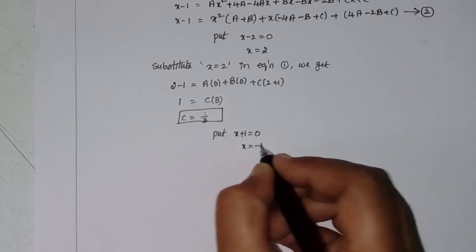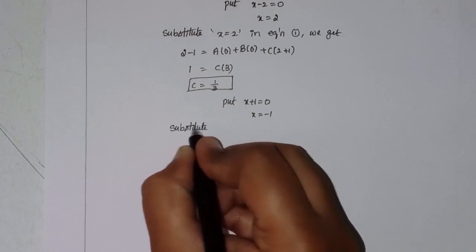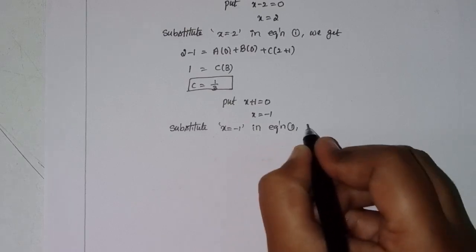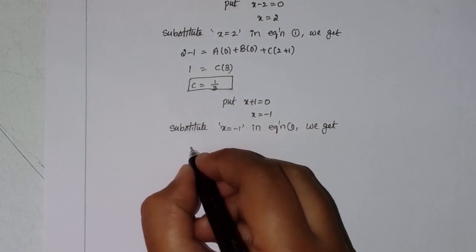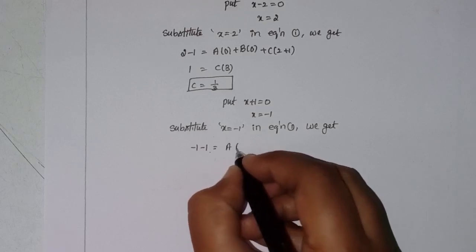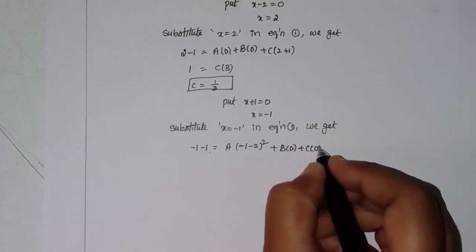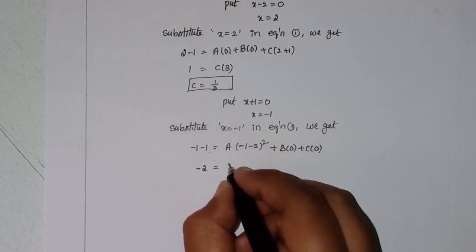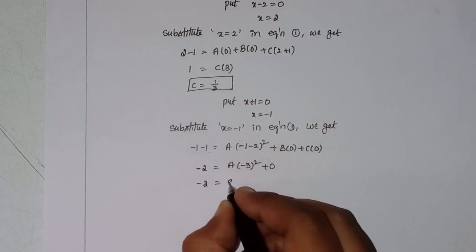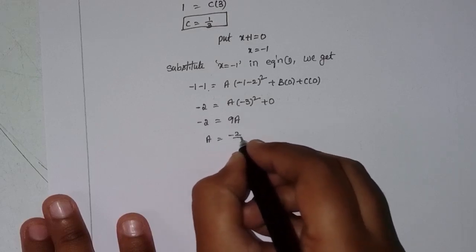Next, put x plus 1 equal to 0, so x equals minus 1. Substitute x equals minus 1 in Equation 1: minus 1 minus 1 equals A into (minus 1 minus 2)² plus B into 0 plus C into 0. So minus 2 equals A into (minus 3)² equals 9A. Therefore A equals minus 2 by 9.